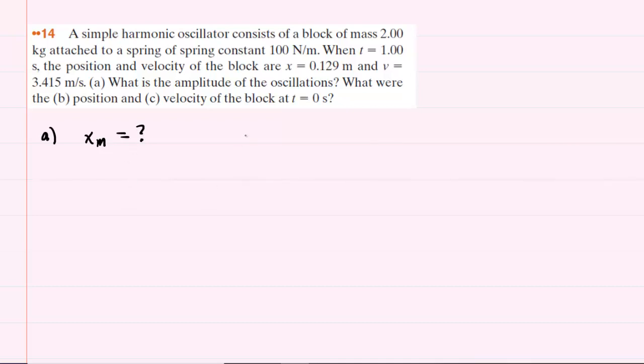It turns out that it's going to be useful to first find the angular frequency, which is symbolized by the Greek letter omega. This is equal to the square root of the spring constant divided by the mass. We were told that the spring constant has a value of 100 newtons per meter and that the mass is 2 kilograms.